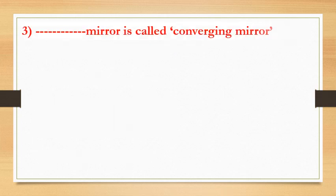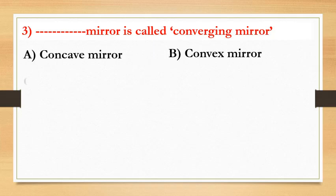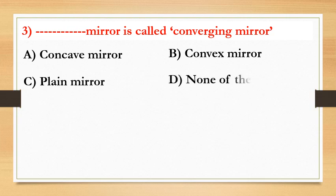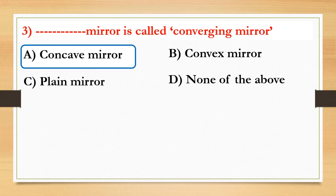Third question: which type of mirror is called a converging mirror? Options are concave mirror, convex mirror, plane mirror, or none of the above. Observe the following video for explanation.